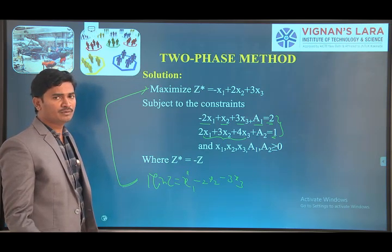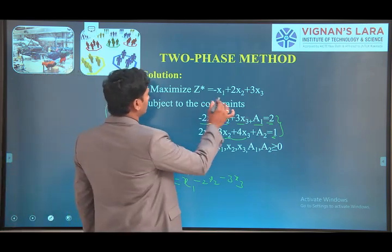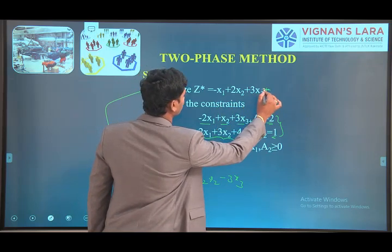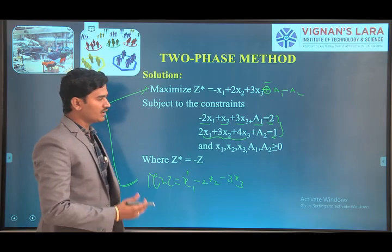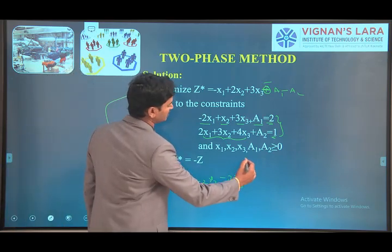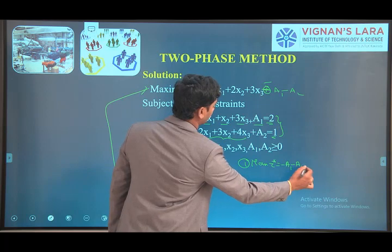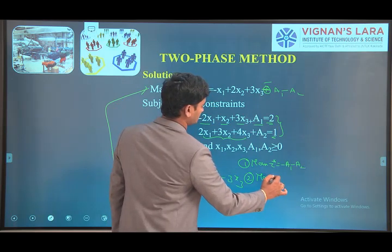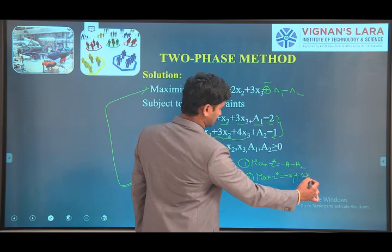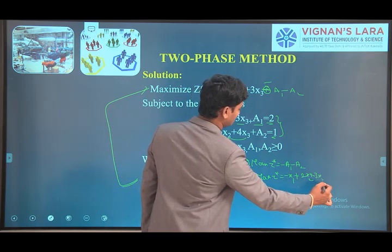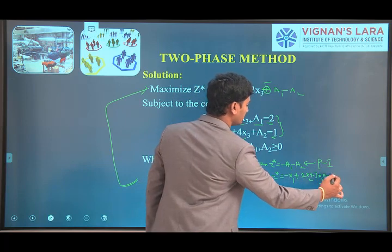We are going to solve the problem using the two-phase method, converting the objective function into two phases. The first objective function for phase 1 is: maximize z = −a1 − a2. The second objective function for phase 2 contains the remaining variables: maximize z = −x1 + 2x2 + 2x3. Phase 1 uses the first objective function, and phase 2 uses the second.